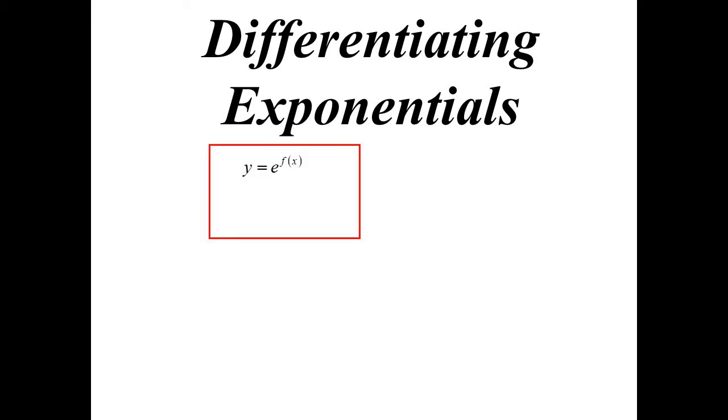To differentiate exponentials, you may recall that the exponential function, the x will be in the power now, unlike the polynomial where the x is the base. So we differentiate the power, that simply goes out the front, but unlike polynomials where we take one off the power, we leave the power line, it stays the same. So it'll be f'(x) times e to the f(x). That is if it is base e.